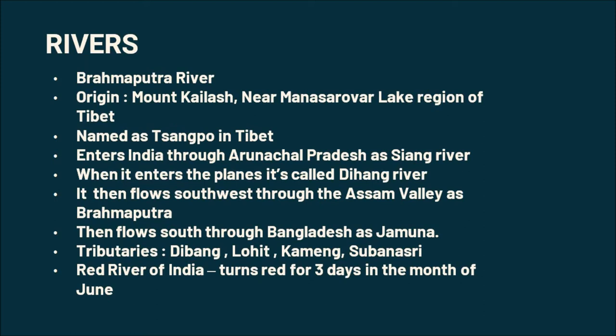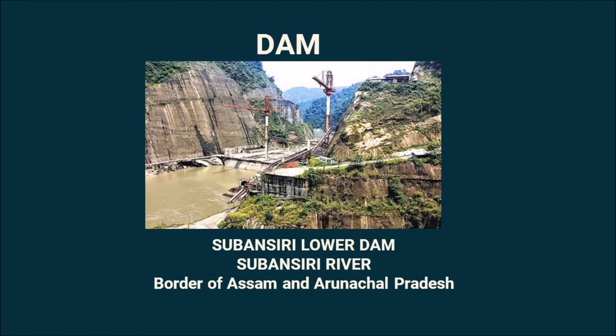Brahmaputra is also known as the Red River of India, as its water turns red for 3 days in the month of June. The Subansiri Lower Dam on the Subansiri river is an important dam of Assam, and it is on the border of Assam and Arunachal Pradesh.